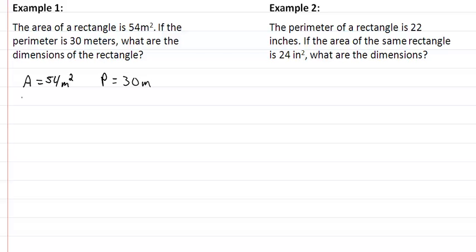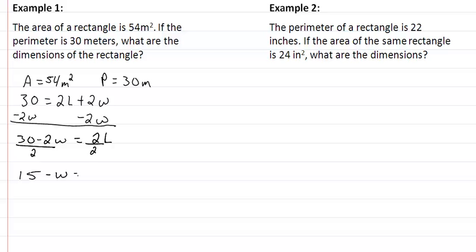So what we want to do here is we want to take our 30 equals 2L plus 2W, and we want to solve for one of our variables. I'm going to go ahead and solve for length. So that being the case, I'm going to subtract 2W from both sides. So I now have 30 minus 2W equal to 2L, divide by 2, and we get 15 minus W is equal to our length.